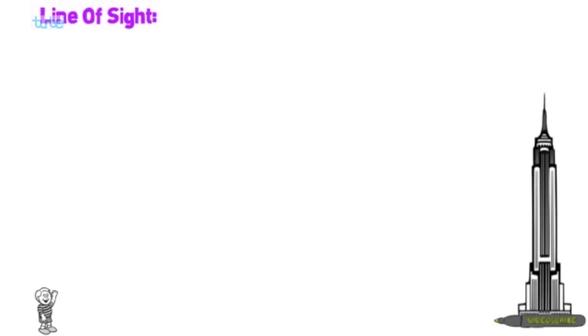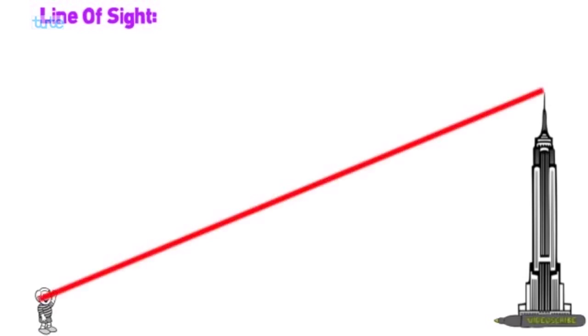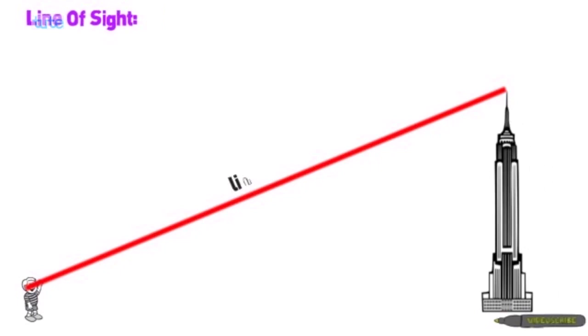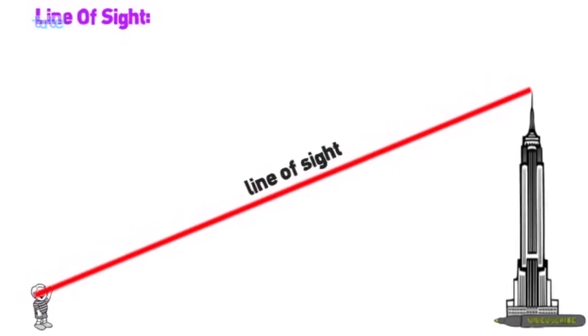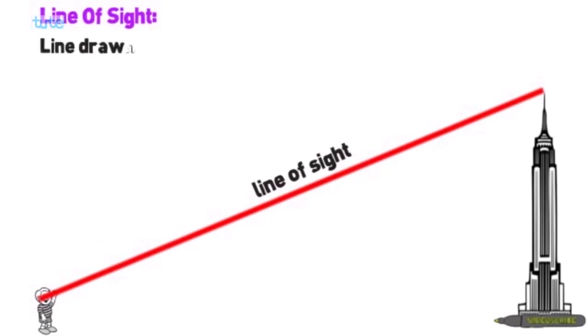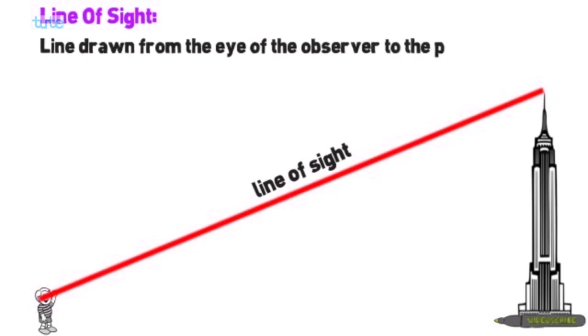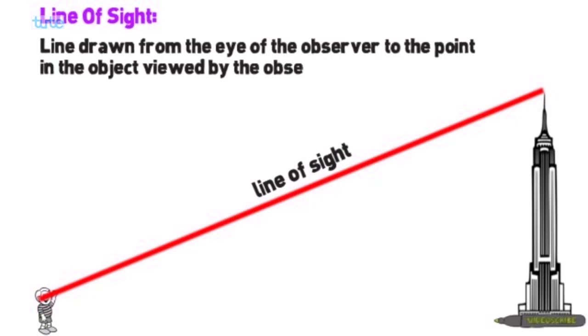Consider a boy standing on the ground and a tower at a certain distance. That boy is watching the top of the tower, so that imaginary line is called the line of sight. The line drawn from the eye of the observer to the point on the object being viewed is called the line of sight.